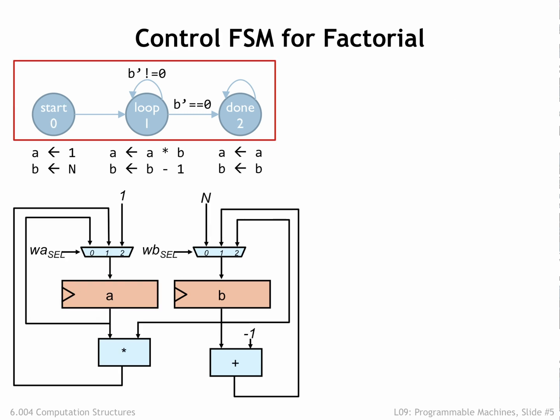Next, we'll add the combinational logic needed to control the FSM's state transitions. In this case, we need to test if the new value to be loaded into the b register is 0. The z signal from the data path will be 1 if that's the case, and 0 otherwise.